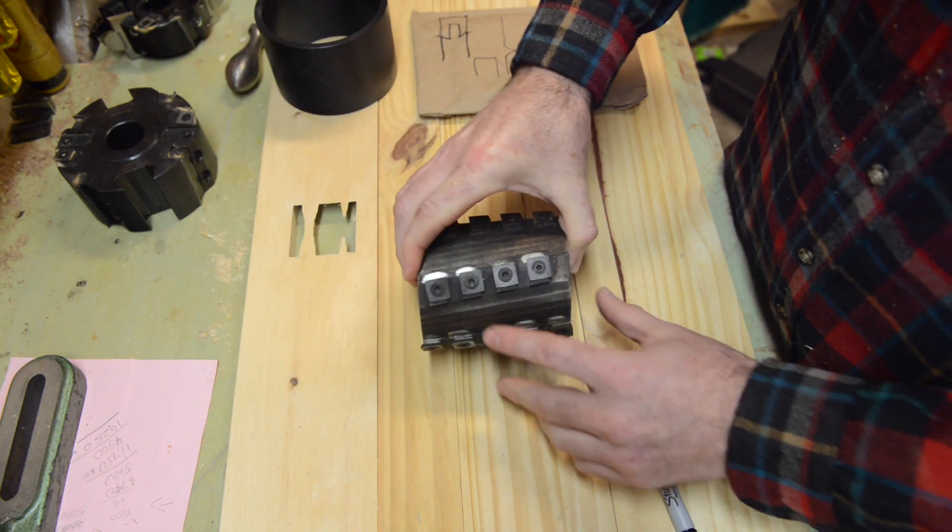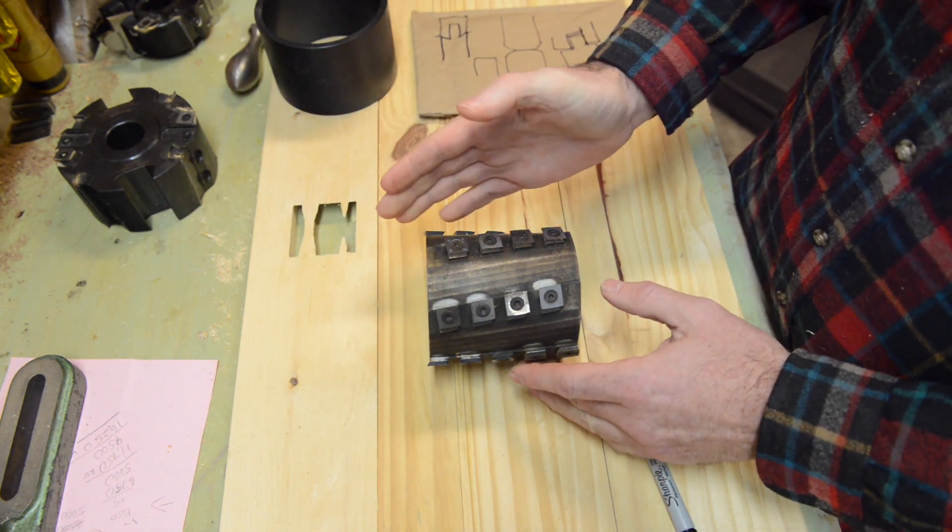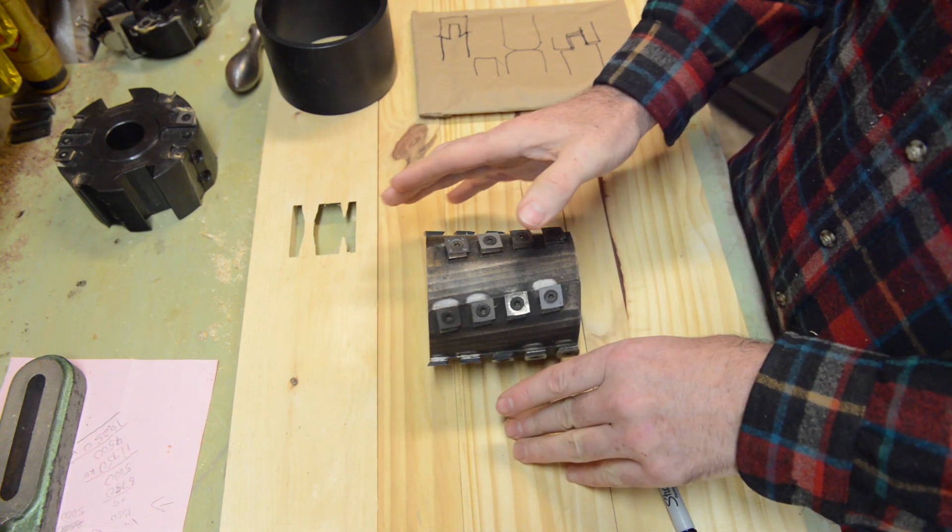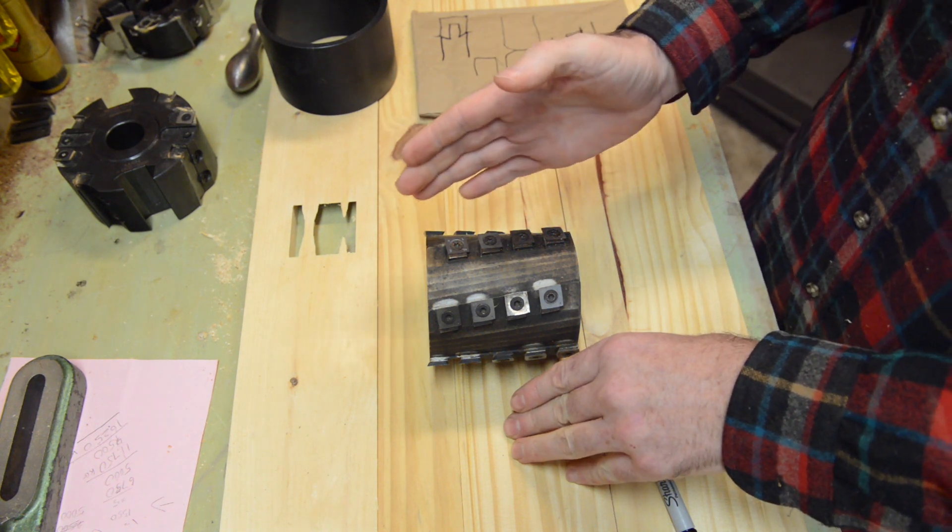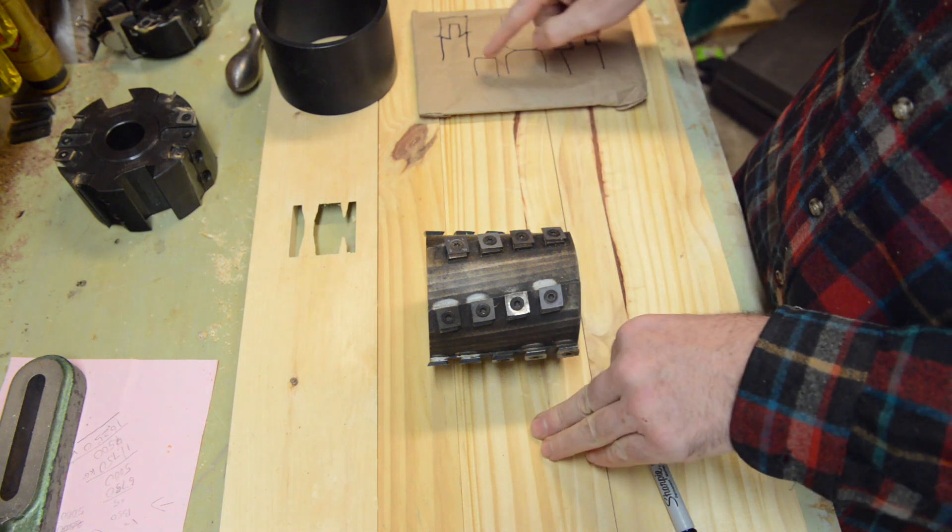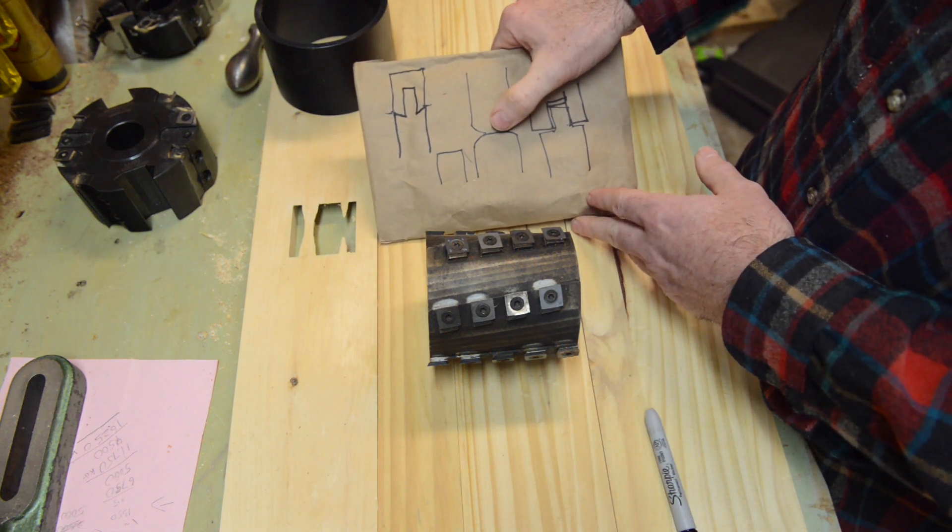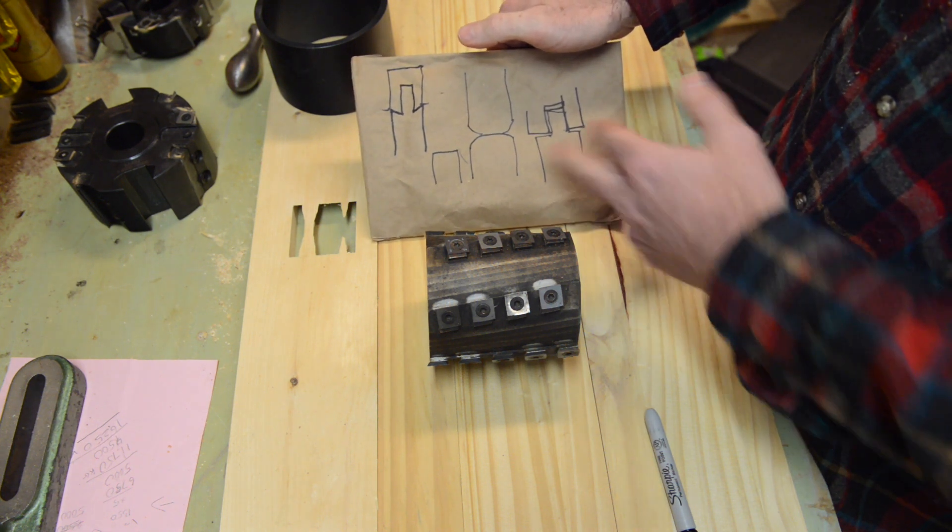Now for example, on jointers and planers where the knives are ground in the head, that's all taken care of and it's perfect. So in that case you get kind of the best of both worlds. You get all the benefits of a shear cutting action without any effect like this. This might matter if you're on a 16-inch wide jointer, but on something small like a shaper head, 99.9% of the time it never actually matters.